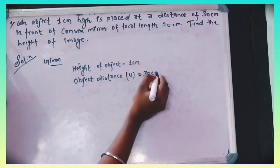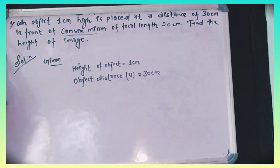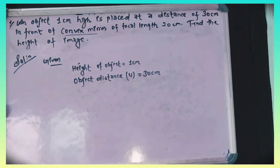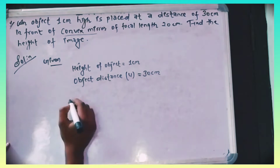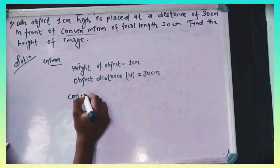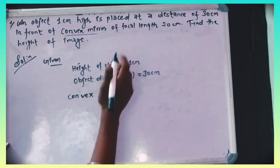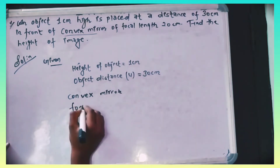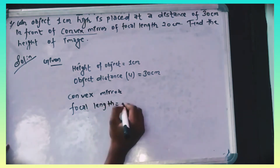This is the condition of a convex mirror. For a convex mirror, the focal length is positive. The focal length given is 20 cm.